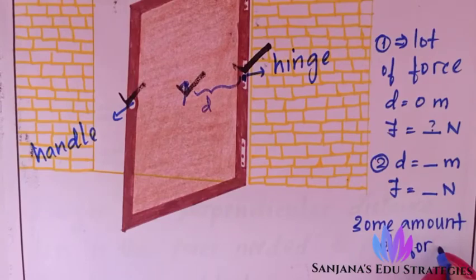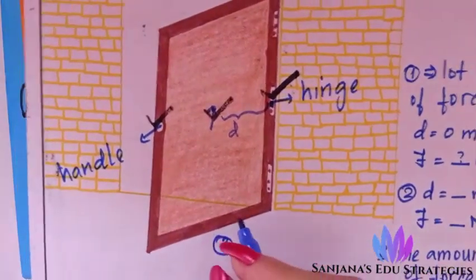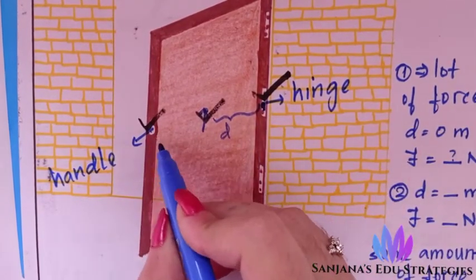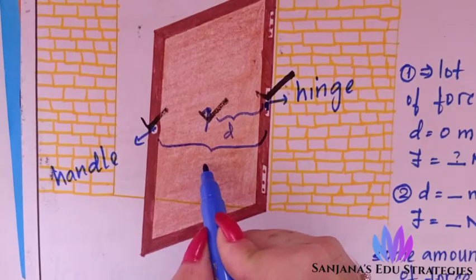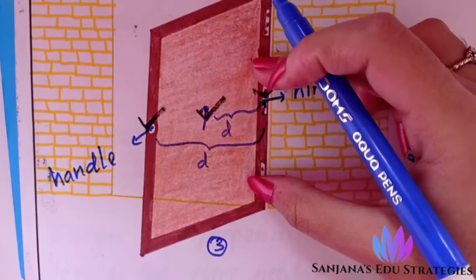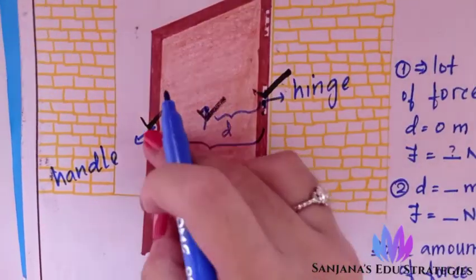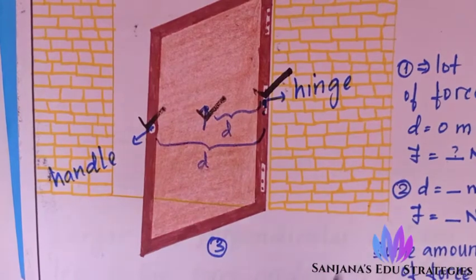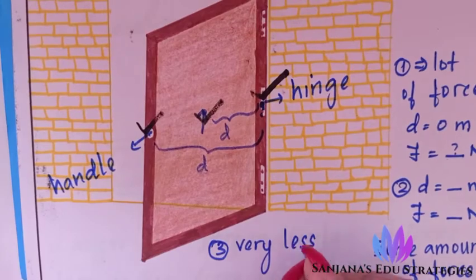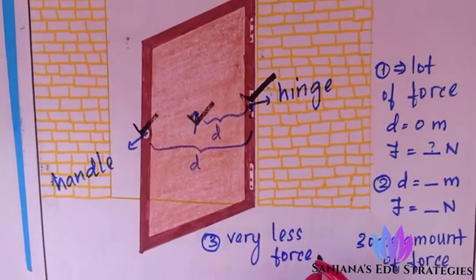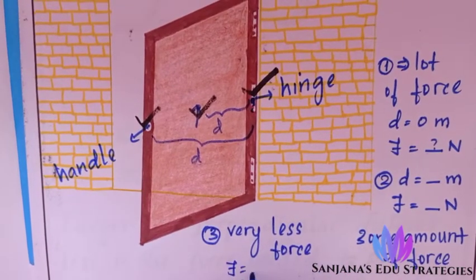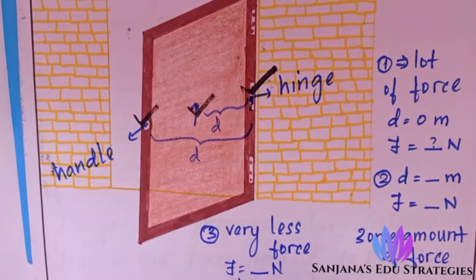In the third case, we apply force at the handle. From the pivoted point — the hinge — to the handle, there is a large distance. Because of this large distance, we need very little force to open or shut the door. We apply a small force over a large distance.